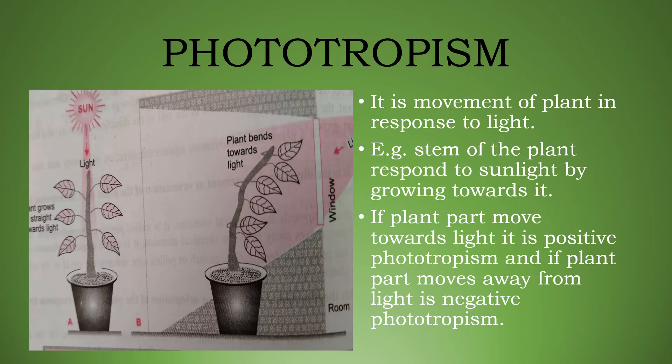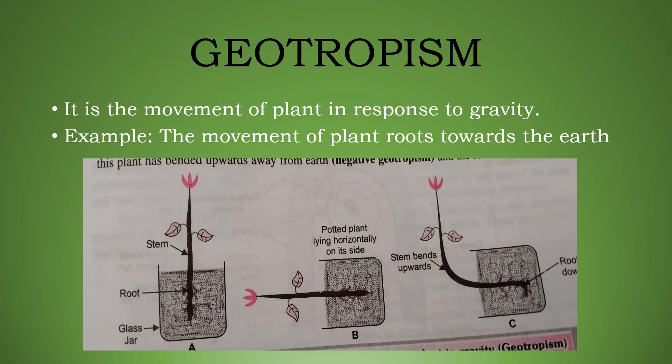The first is phototropism — 'photo' means light. The plant gives response to light. For example, the stem of a plant grows towards the light. If the plant receives light from all directions it grows straight, but if it is in a dark room and light comes from one side, the stem bends towards the source of light.